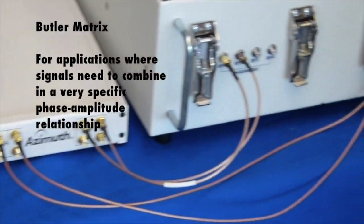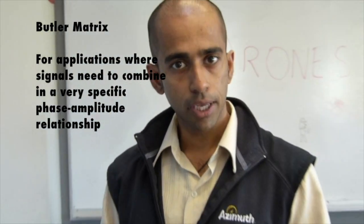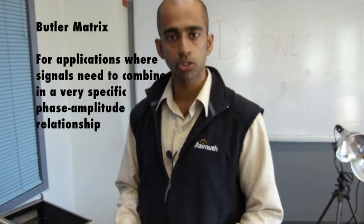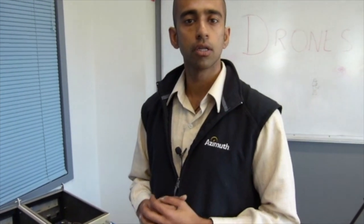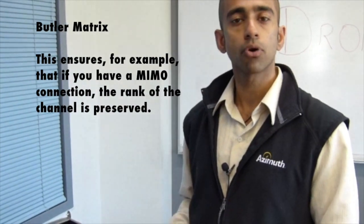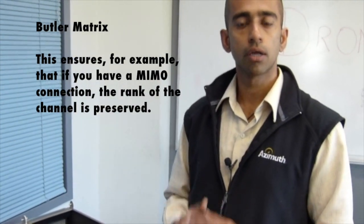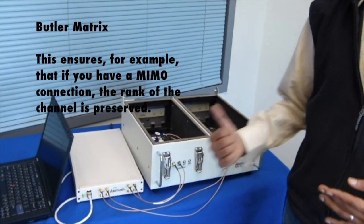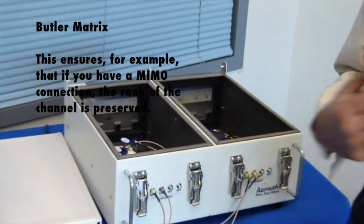This also features a Butler matrix. A Butler matrix is important for applications where the signals need to combine with a very specific phase amplitude relationship. Let's talk in simple terms. In simple terms, if you have a MIMO connection, you need to make sure that the rank of the channel is preserved. This ensures that not only are you changing the path loss, you're also preserving the rank of the channel.